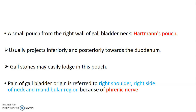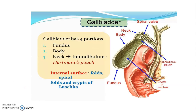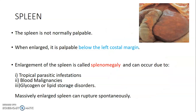The reason for this referred pain is the phrenic nerve, which has a root value of C3, C4, and C5. If there's any pain of gallbladder origin it will be referred to these dermatomes, which include the right shoulder, right neck, and the mandibular region.